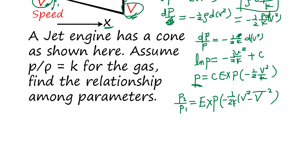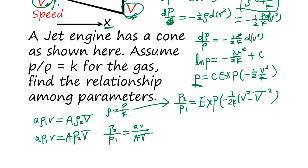And the gas flow is ρ1 v times cross section a equals cross section A times ρ2 V. And since ρ is directly related to pressure, it's going to be a P1 v equals A P2 V. So P2 over P1 equals av over AV, which equals exponent minus 1/2K times (v² minus V²).